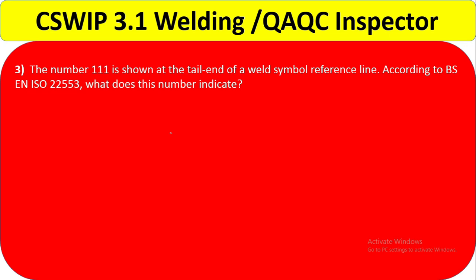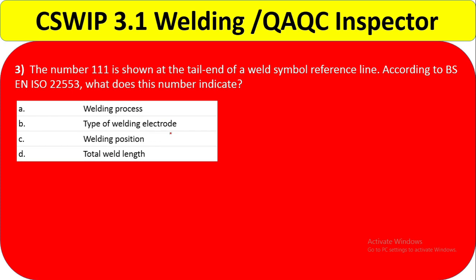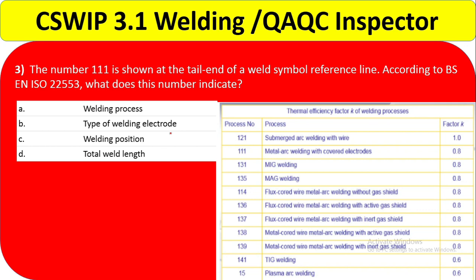Question 3: the number 111 is shown at a tail end of a weld symbol reference line. According to BS EN ISO 22553, what does this number indicate? Option A is welding process, option B is type of welding electrode, option C is welding position, and option D is total welding. Process number 121 is submerged arc welding with wire; process number 111 is metal arc welding with covered electrode. Every process has a different designation. So 111 is for metal arc welding — this means this is the welding process. Option A is the correct answer.